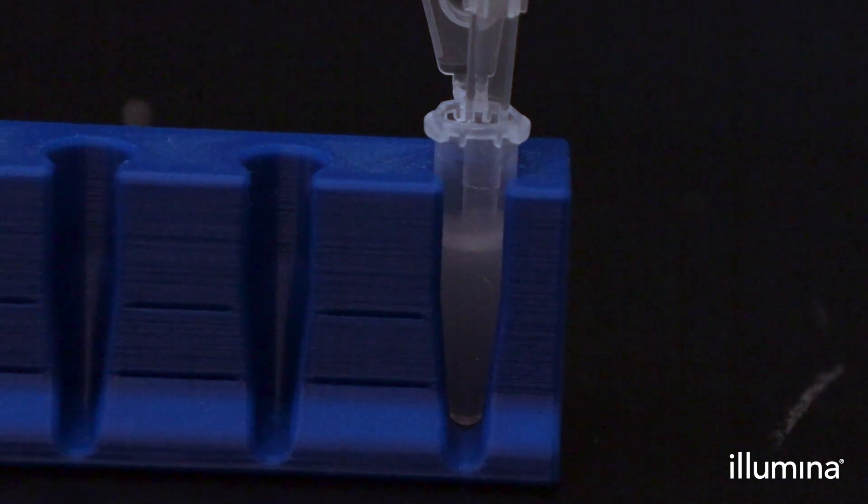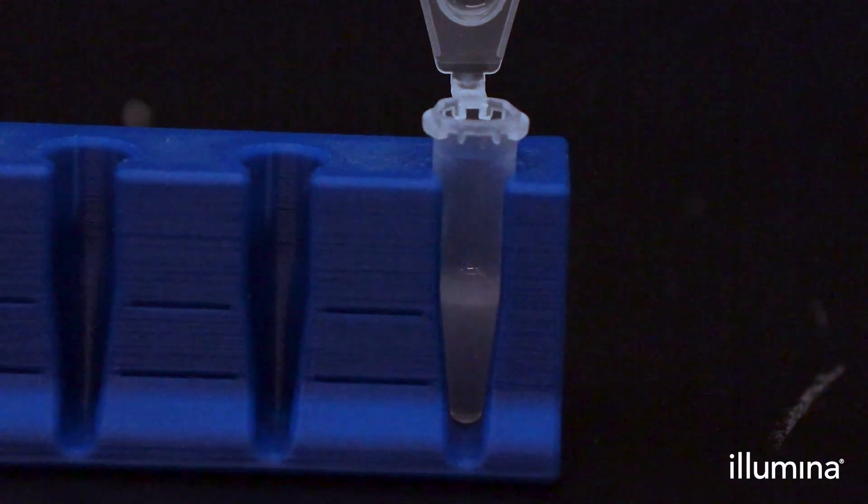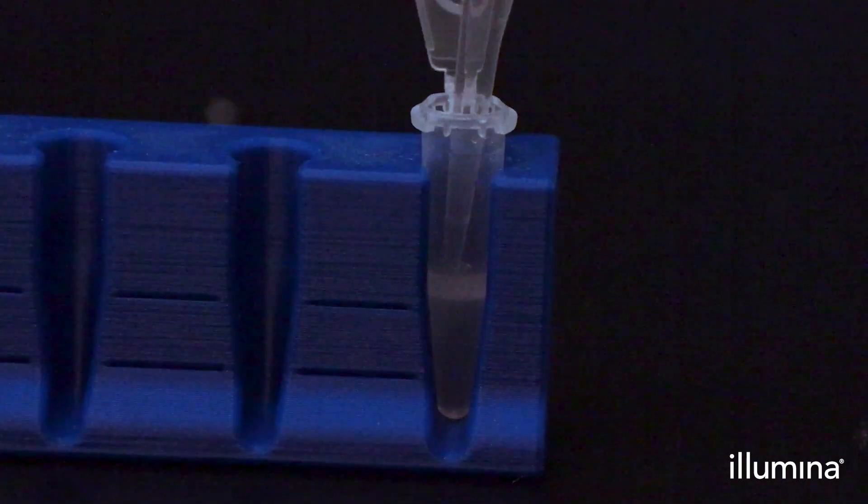After the emulsion has stabilized post-vortexing, use a low-retention P200 pipette tip to pipette out 115 microliters of partitioning reagent from the bottom phase. Place the pipette tip at the bottom of the tube and wait 5 seconds before aspirating. Wipe the tip on the side of the tube on the way out to avoid any sample loss due to pips retention to the pipette tip.